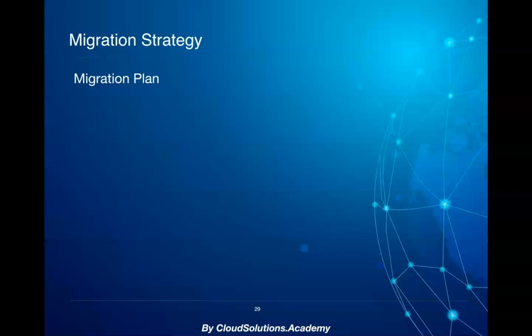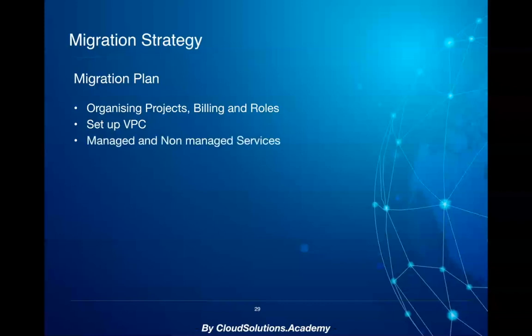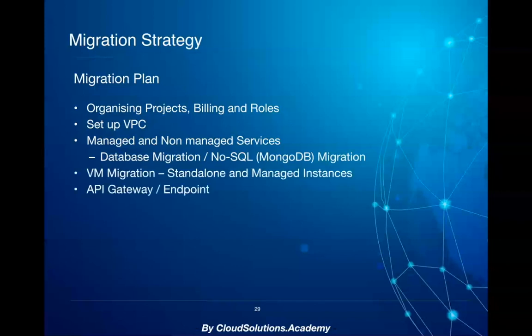With respect to the migration plan, you first start off with organizing projects, buildings and roles, and set up the virtual private cloud for segregating your application environment. Once the basic infrastructure is set up, you then migrate managed and non-managed services from the other cloud vendor to AWS, including application and database migration. Since the application uses virtual machines, API gateways, and ad-hoc jobs, you look at how to migrate all these components into equivalent AWS services.